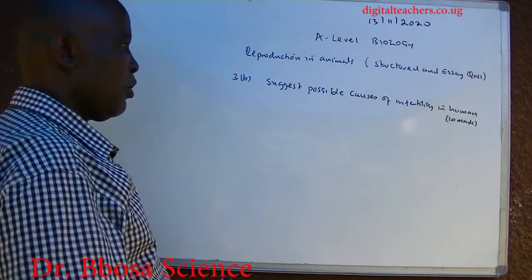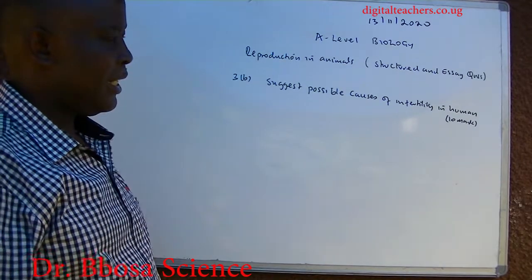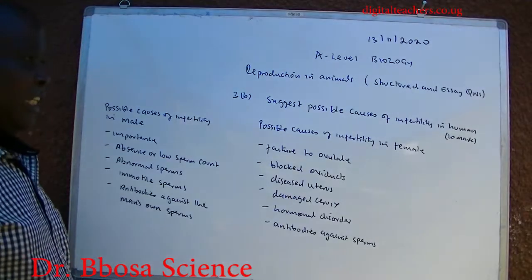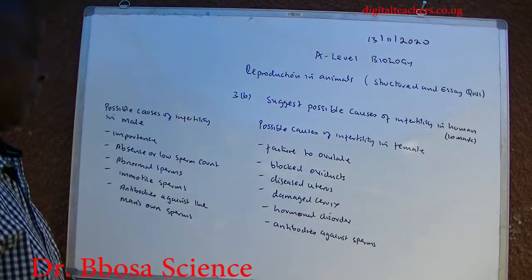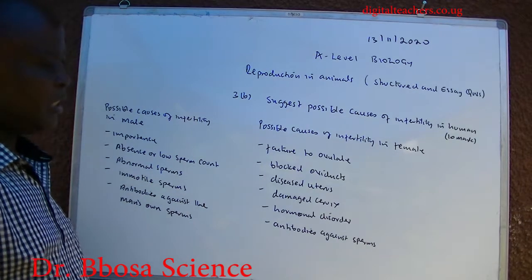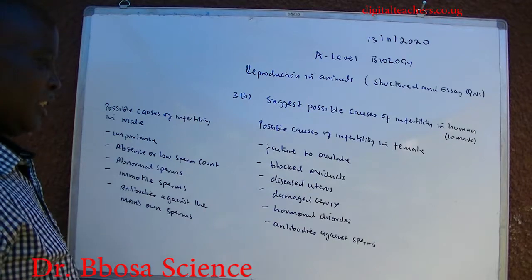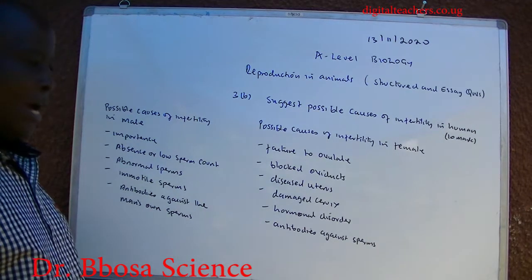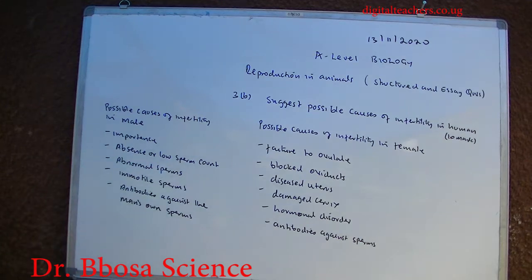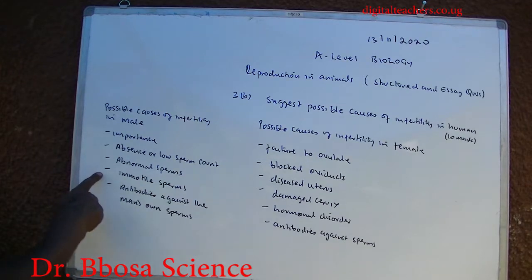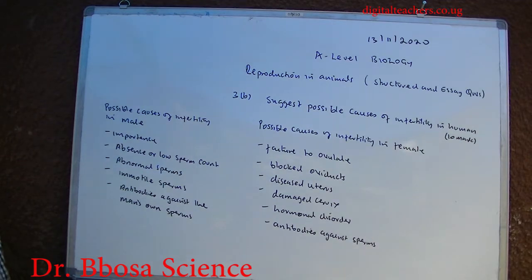Suggests possible causes of infertility in the female: failure to ovulate, blocked oviduct, disease of the uterus such as fibrosis, damaged cervix, hormonal disorders, antibodies against sperms. Possible causes of infertility in the male: impotence, absence of or low sperm count, abnormal sperms, immotile sperms, antibodies against the man's own sperms.